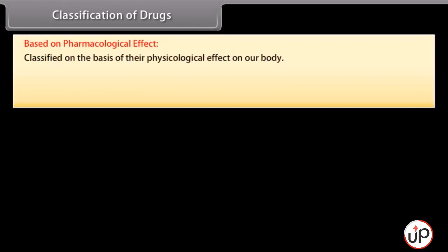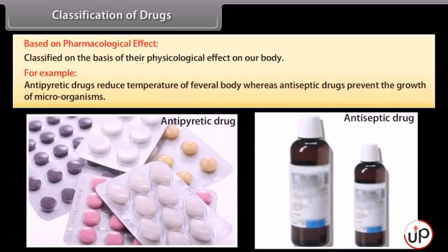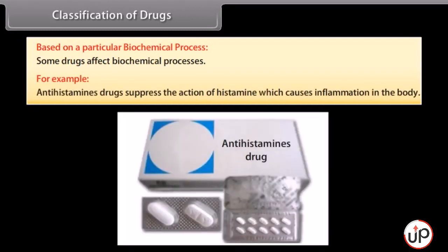Classification of drugs. Drugs can be classified in several ways. Based on pharmacological effect: drugs are classified on the basis of their physiological effect on our body — for example, antipyretic drugs reduce the temperature of a fevered body, whereas antiseptic drugs prevent the growth of microorganisms. Based on a particular biochemical process: some drugs affect biochemical processes.